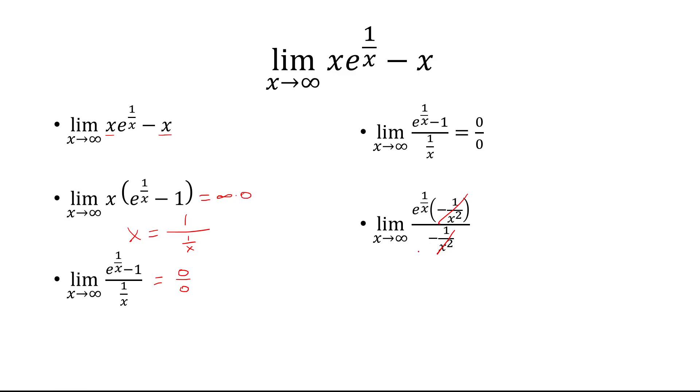So we just need to take the limit of e to 1 over x as x approaches infinity. We know that 1 over x approaches 1. I'm sorry, approaches 0. So e to the 0 is going to equal 1. And that is the limit.